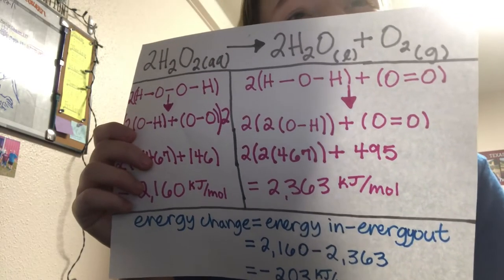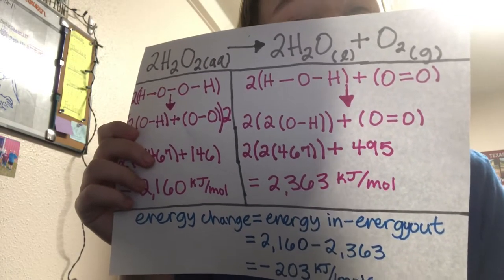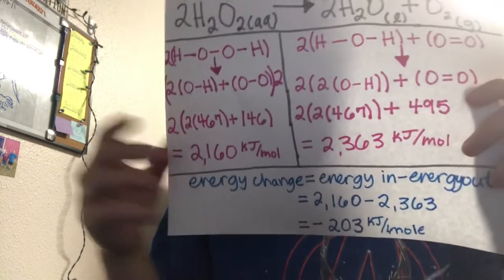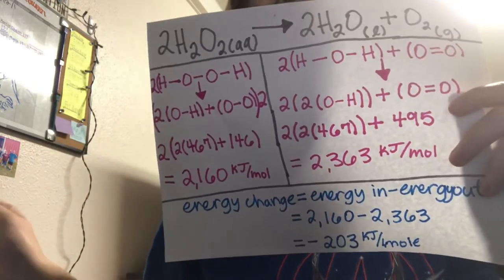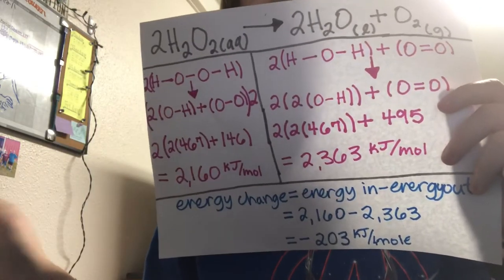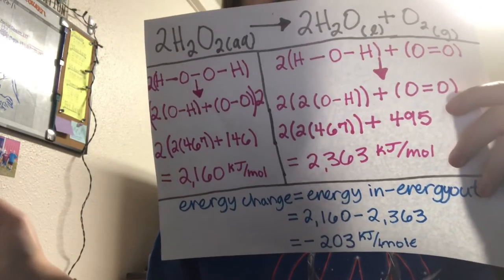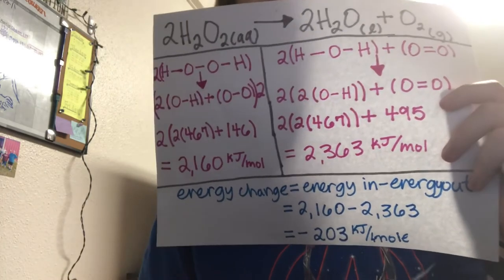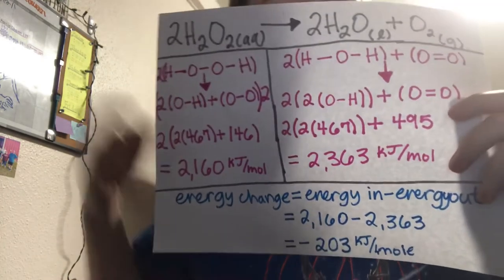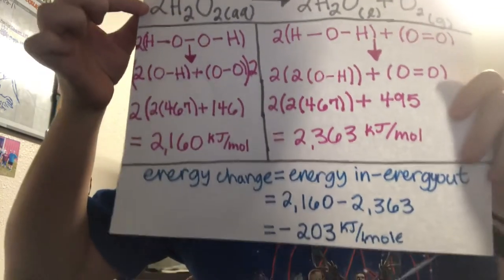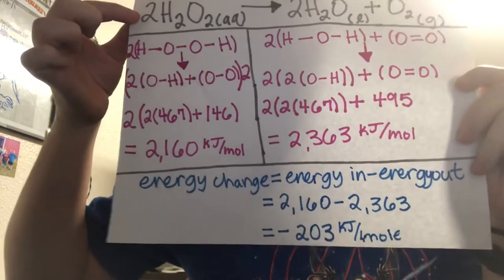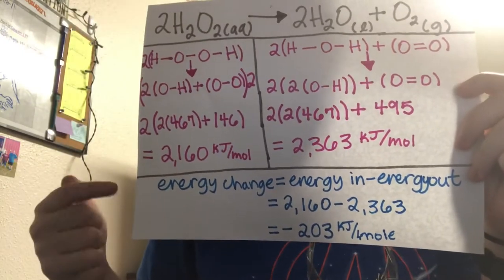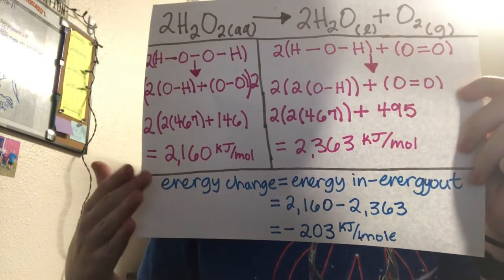So two times the average bond energy of an O-H bond, which is 467, plus the average bond energy of an O-O bond, which is 146. This gives us 1080. We must take into account that there are two moles of hydrogen peroxide in our equation, so we multiply 1080 by two to get 2160 total for our reactant side.